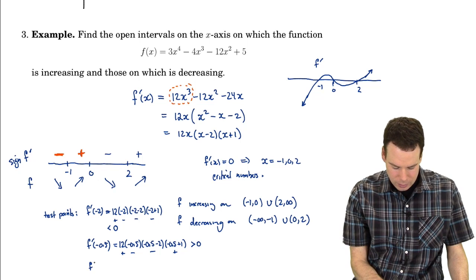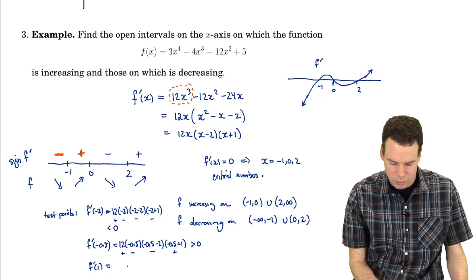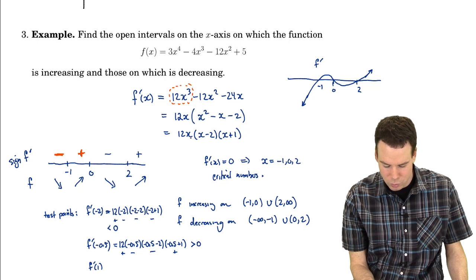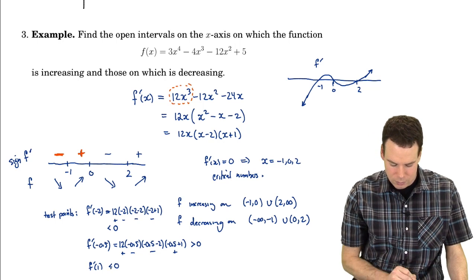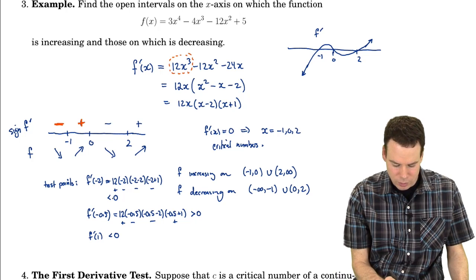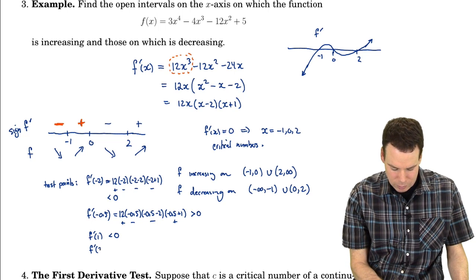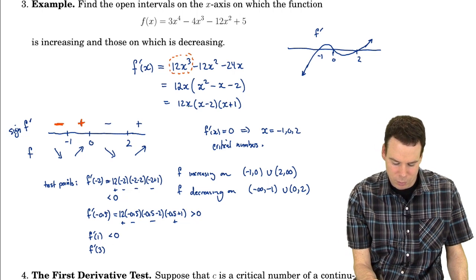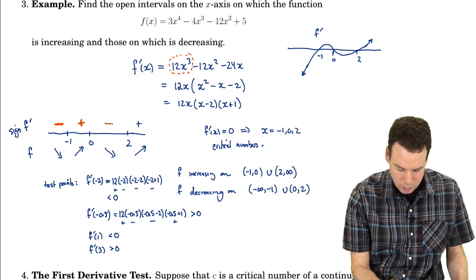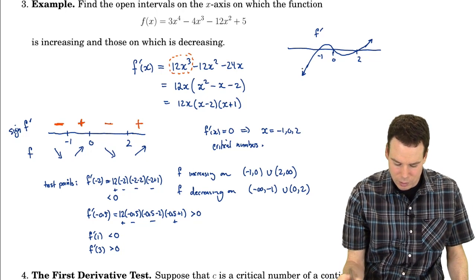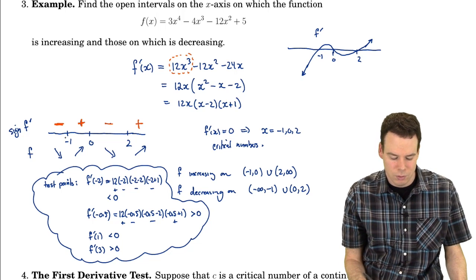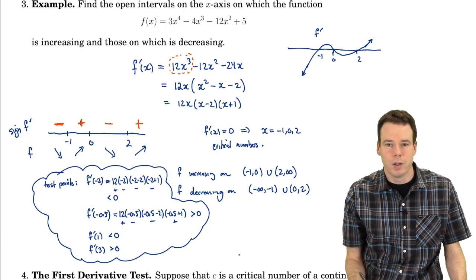For the interval from 0 to 2, I take the test point x = 1: 12(1)(1 - 2)(1 + 1) gives positive times negative times positive — so that's negative. For the interval to the right of 2, I try x = 3: 12(3)(3 - 2)(3 + 1) gives positive times positive times positive — so that's positive. Either from the graph or from test points, we get the signs of the derivative and can immediately read off where the function is increasing and decreasing.